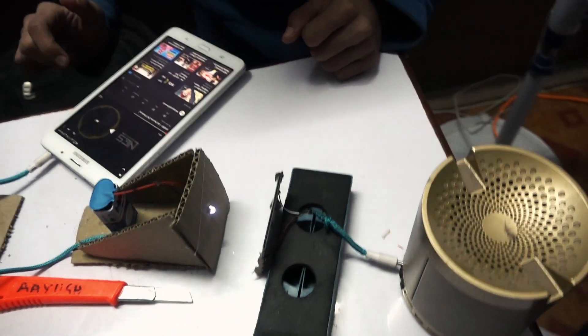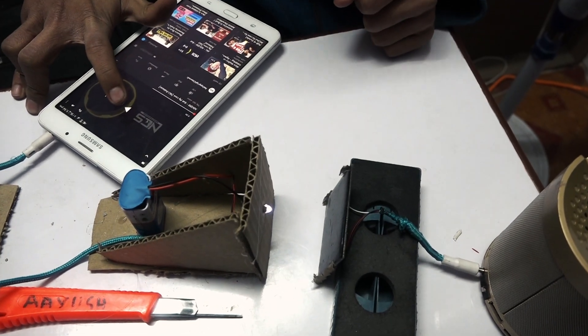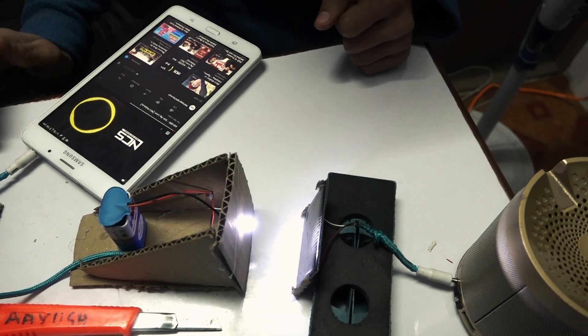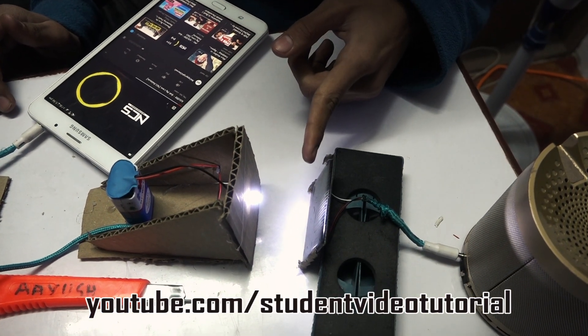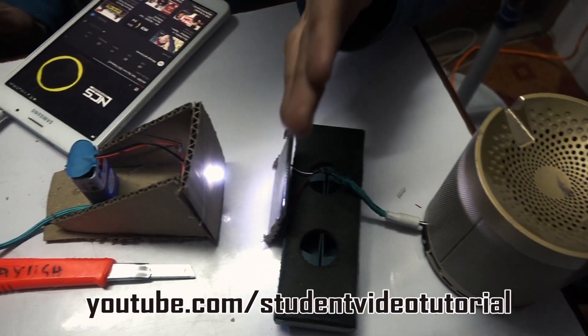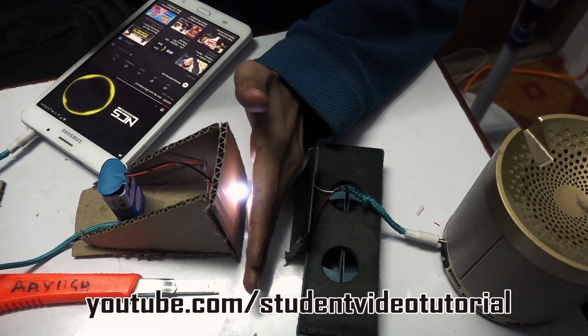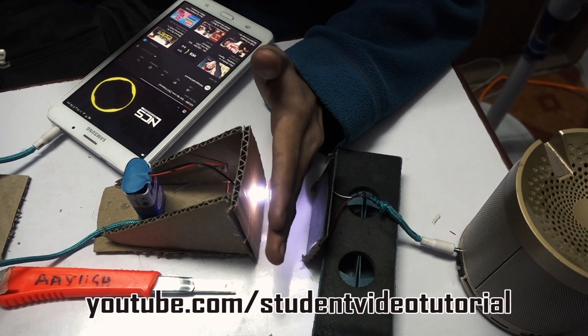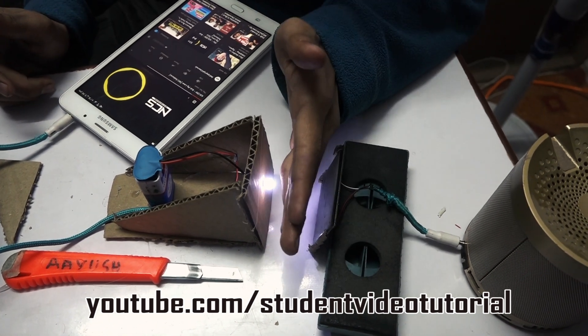So when I play this music, the light is being passed which is observed by solar cell and it is converting into hearable sound. So when I block this light, you can hear that the intensity of sound is too low, but when I remove my hand it is much higher.